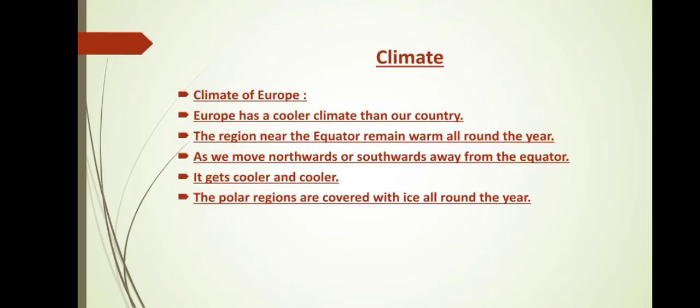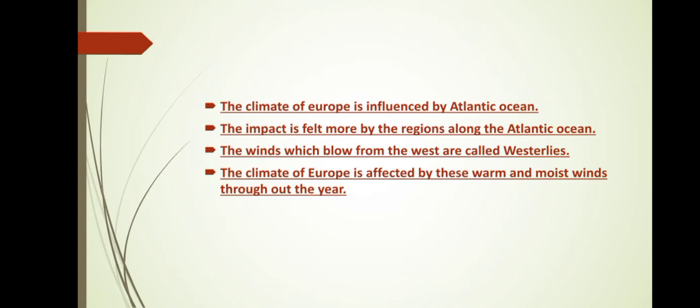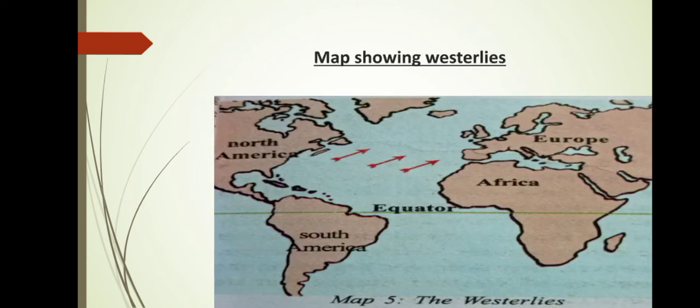Now let us discuss about the climate of Europe. Europe is cooler than our country. The region near the equator remains warm all around the year. As we move northwards or southwards away from the equator, it gets cooler and cooler. The polar regions are covered with ice all around the year. The climate of Europe is influenced by the Atlantic Ocean. The winds which blow from the west are called westerlies, and the climate of Europe is mostly affected by these westerlies. Now you can see the westerlies on the map.